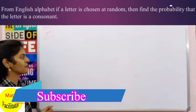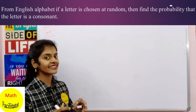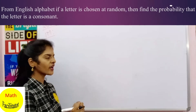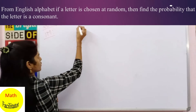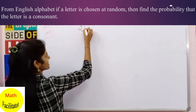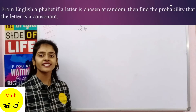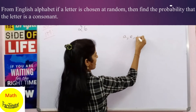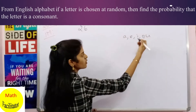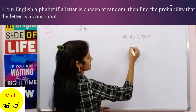Moving on to our first question — this is from 2019 as a one-mark question. From the letters of the English alphabet, you have to find the probability that the letter is a consonant. So how many alphabets are there in English? There are 26 alphabets. And how many consonants? As you know, A, E, I, O, U are the vowels — there are five vowels. So out of 26, subtracting five gives us the consonants.